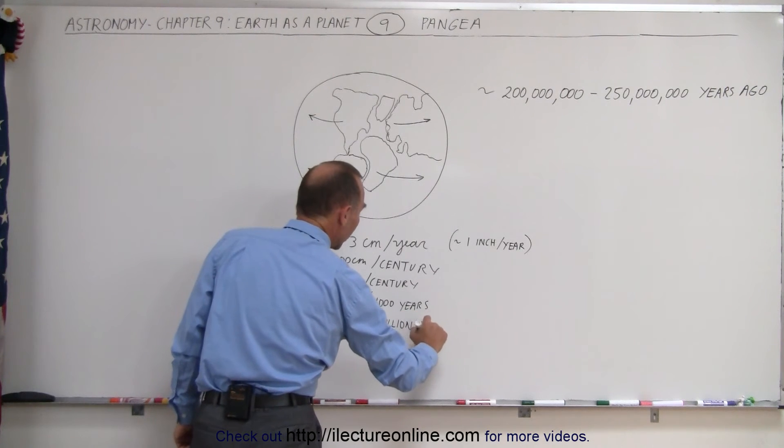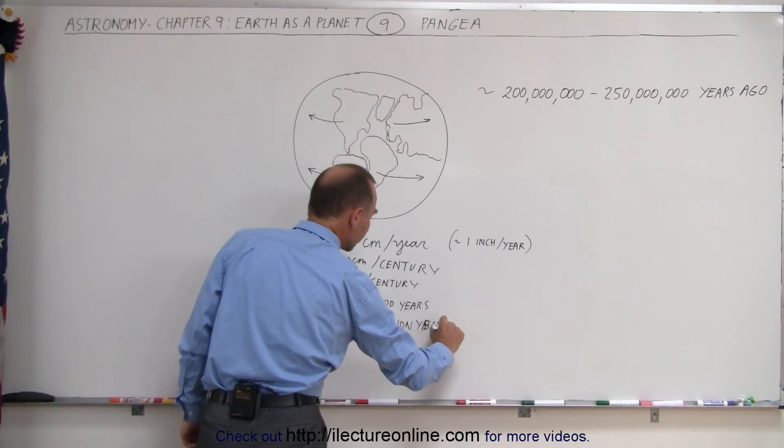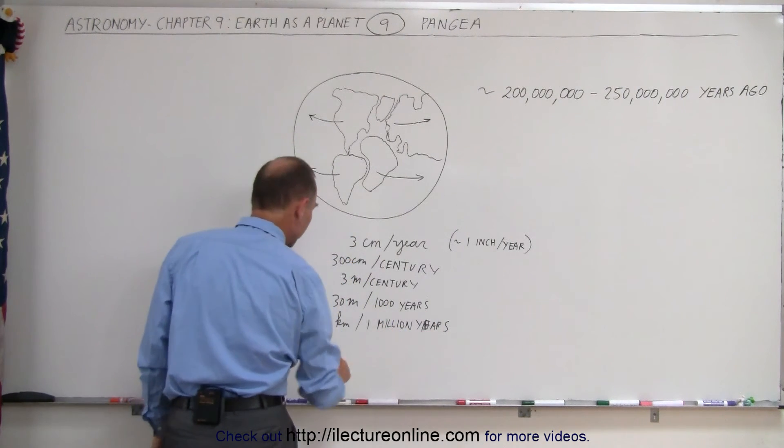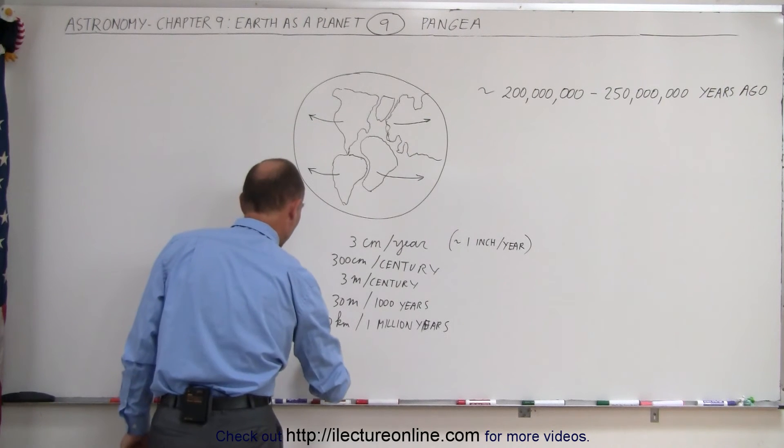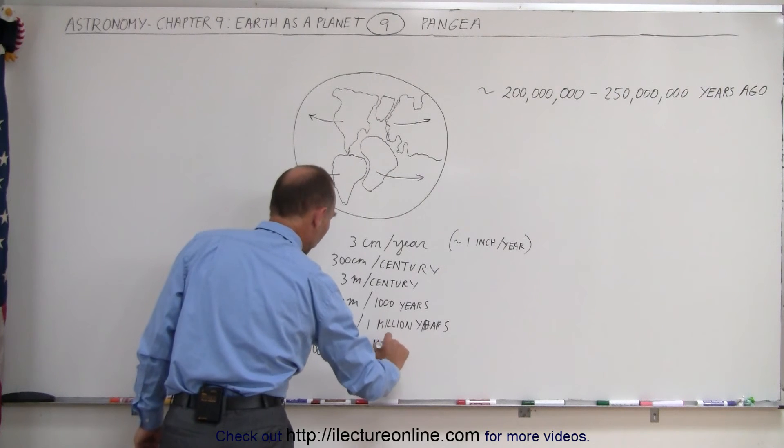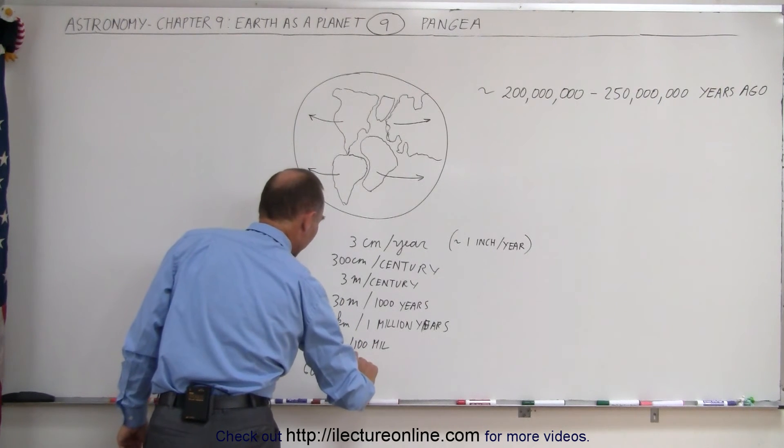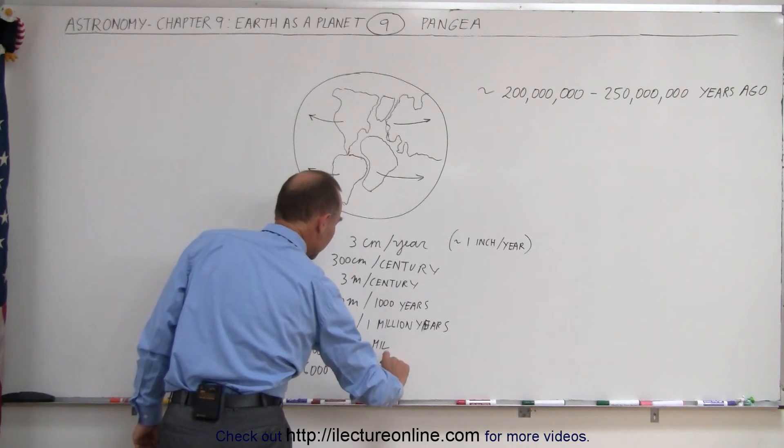And then if we go to a hundred million years, if we now go into a hundred million years, we multiply that times a hundred, we have 3,000 kilometers in a hundred million years or 6,000 kilometers in 200 million years.